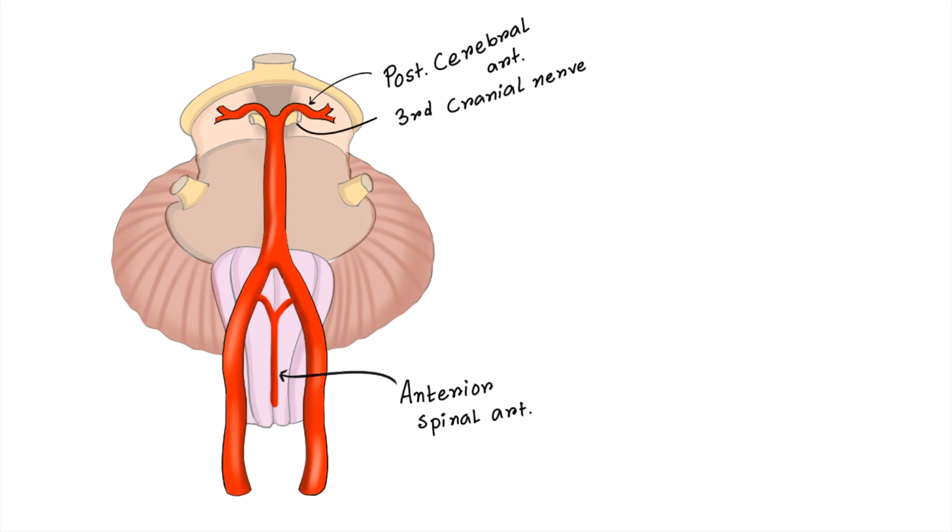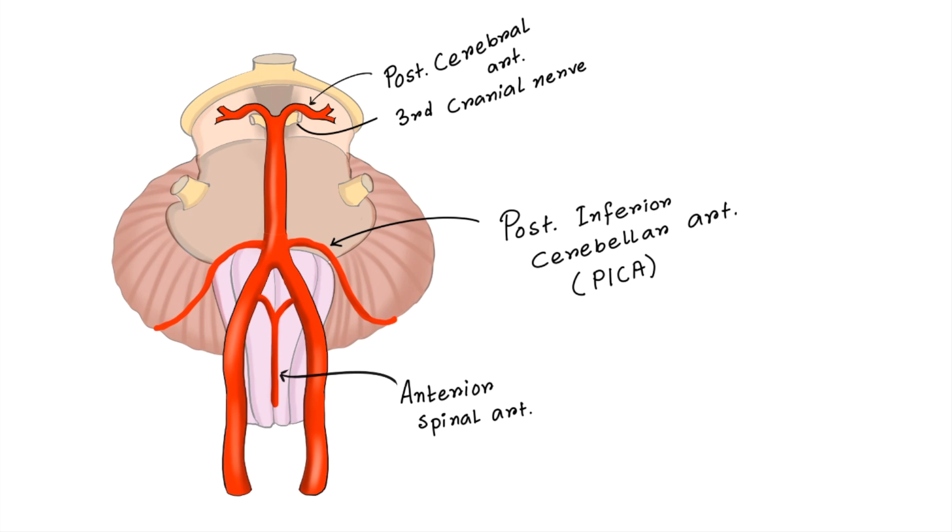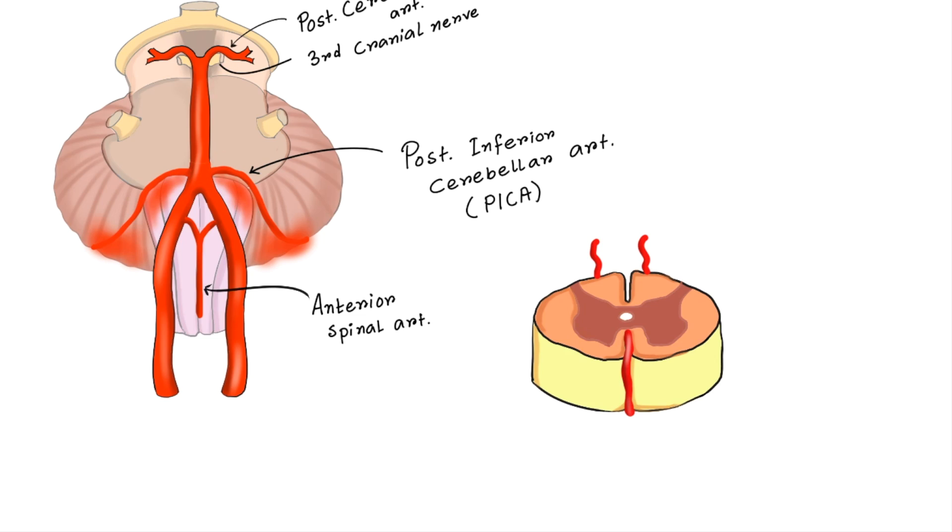Next branch goes to the inferior portion of the cerebellum. So this branch is called posterior inferior cerebellar artery or PICA. Don't confuse it with posterior cerebral artery. This is cerebral which is related to cerebrum. And this is cerebellar artery which is related to cerebellum. So this posterior inferior cerebellar artery supplies the inferior portion of the cerebellum and lateral part of the medulla.